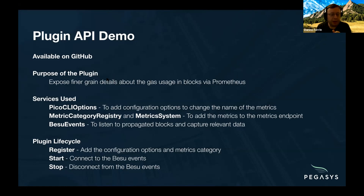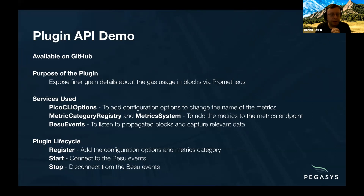To go through the lifecycle of the plugin, we're going to do the three lifecycle bits: register the plugin and do the Pico CLI options and metrics category work, start with the metric system and Besu events, and then stop the Besu events.